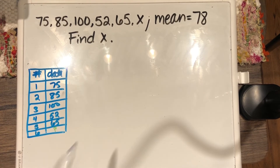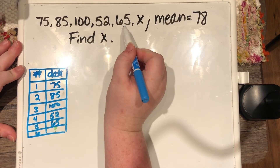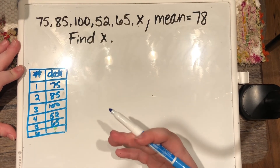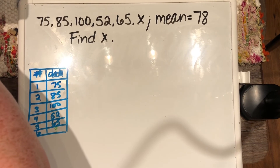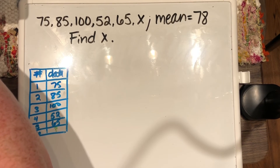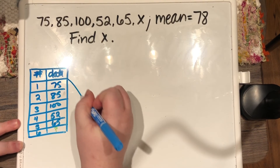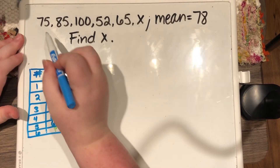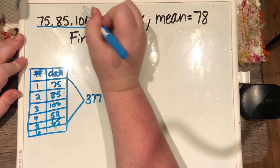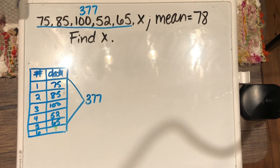I'll put a question mark for the sixth value. If you like using the chart like we did in the last problem, you can definitely make one. What we're doing is adding up everything we have to get that first total, so that later we can use it to subtract. So add up 75 plus 85 plus 100 plus 52 plus 65. The stuff that we know is a total of 377 — that's the total of the first five numbers.